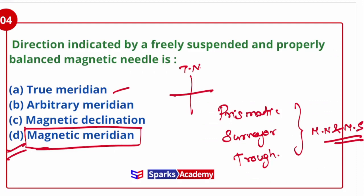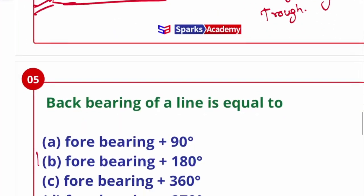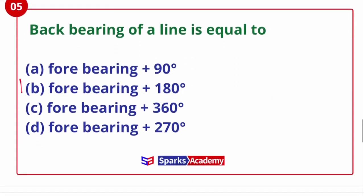Next: Back bearing of a line is equal to what? The difference between back bearing and forward bearing is always 180 degrees. Back bearing is equal to forward bearing plus or minus 180 degrees.